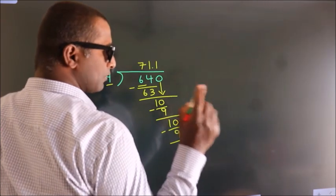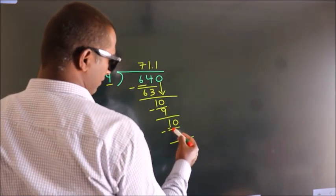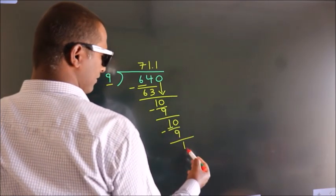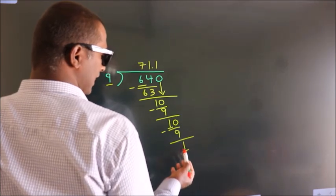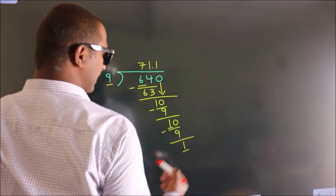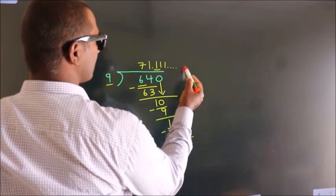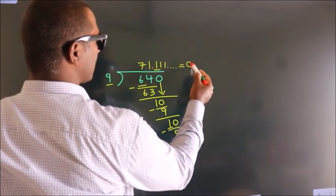Now you observe. We had 1 here, and we got 1 again. That means this number keeps on repeating. So this is our quotient.